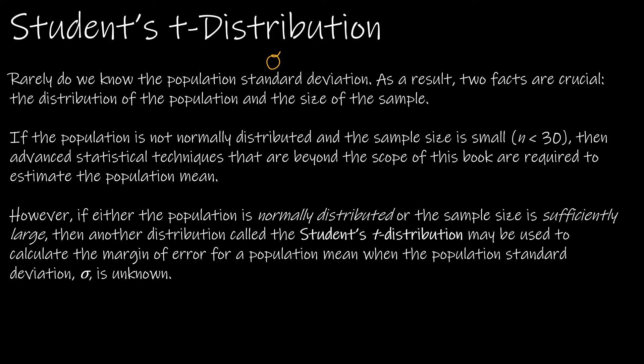However, if one of those two things is true, even if sigma is unknown, if either the population is normally distributed or the sample size is sufficiently large, we can use something called the student's t-distribution, which is just another continuous probability distribution like the normal distribution.